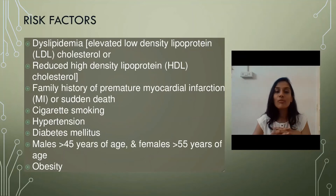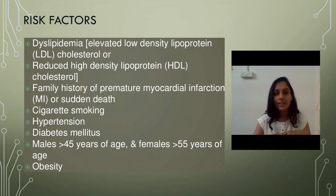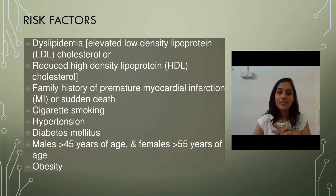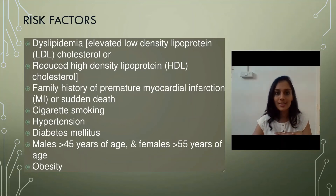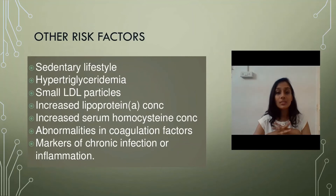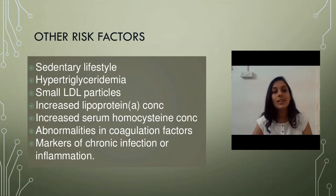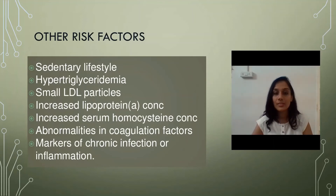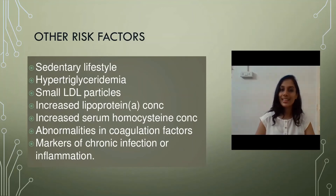The next risk factor is family history of premature myocardial infarction or sudden death. Due to cigarette smoking, there also occurs damage to the endothelial lining. Then hypertension can also lead to ischemic heart disease, as can diabetes mellitus. It is found that males above 45 years of age and females above 55 years of age — that is post-menopausal women — are more prone to ischemic heart disease. Then obesity and sedentary lifestyle are also risk factors. Other risk factors include hypertriglyceridemia, small LDL particles, increased lipoprotein concentration, increased serum homocysteine concentration, abnormalities in coagulation factors, and any type of chronic infection or inflammation.